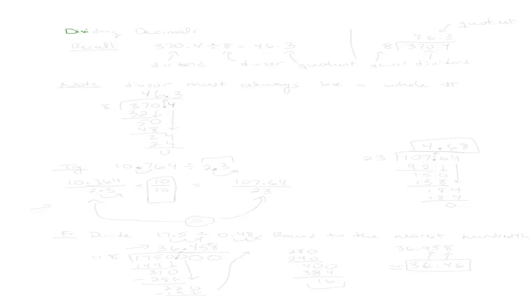Now we're going to talk about dividing decimals. Before we do, let's remember a couple of things. If you take 370 and 4 tenths divided by 8, that gives you 46 and 3 tenths. All these numbers have special names. The number we're dividing is called the dividend. The number we're dividing by is called the divisor. And the answer is called the quotient.